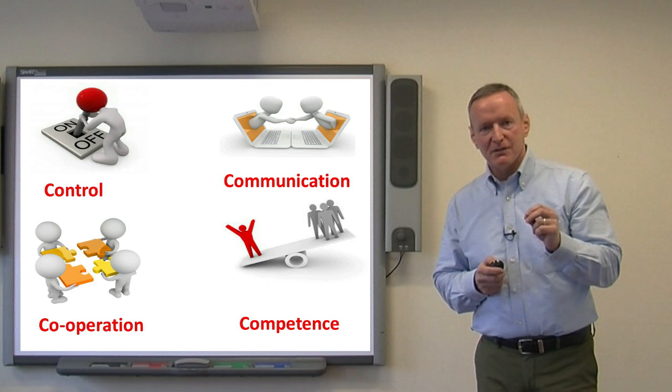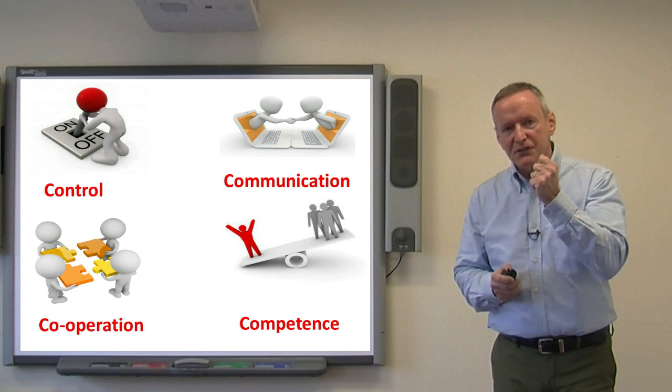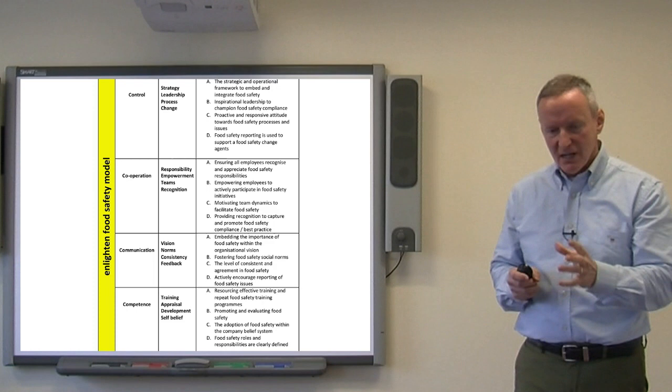The last C, competence. And with competence we take a root and branch review of an organisation's training regime. We also look at their appraisal systems and ask the questions, do they work? We also look at the development of the tangible examples of employees being promoted from within the organisation rather than being recruited from outside. And lastly, was there a feeling of self-belief in the organisation?